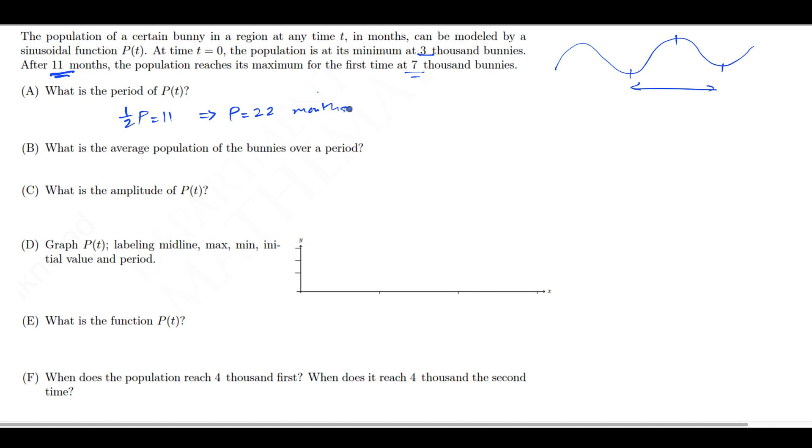The next question is asking, what is the average population of the bunnies over a period? Because sinusoidal functions are symmetric about their midline, if an integer number of periods is passing, the average value is the average between the minimum and maximum value. So that's how I'm computing it.